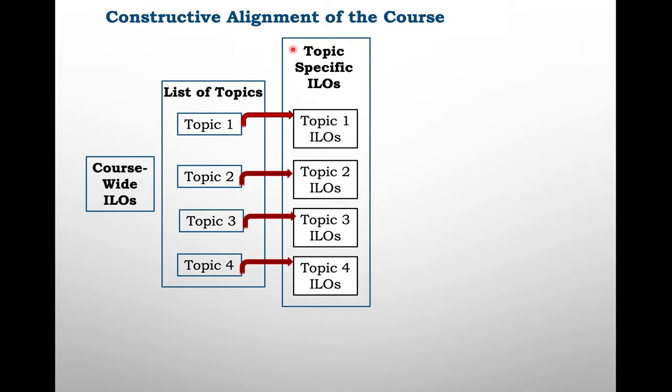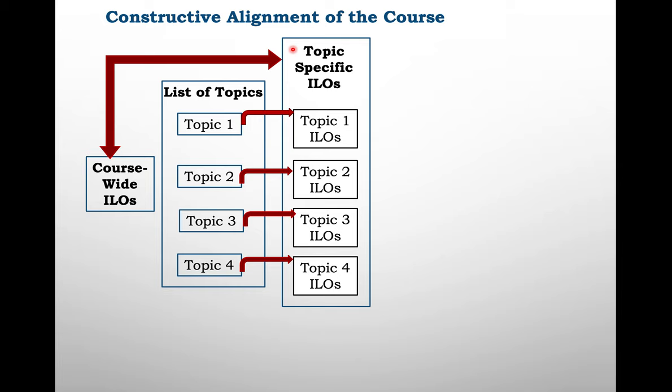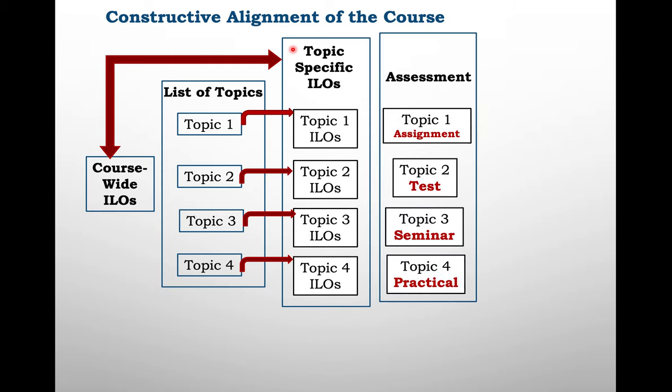Now we go a step ahead and generate or synthesize topic-specific intended learning outcomes. By the time the student has completed topic one, there is a set of competencies we expect them to know, demonstrate, or do. These topic-specific intended learning outcomes align well with our course-wide intended learning outcomes. We then look at assessments — assignments, tests, seminars, practicals — and align them in our model.